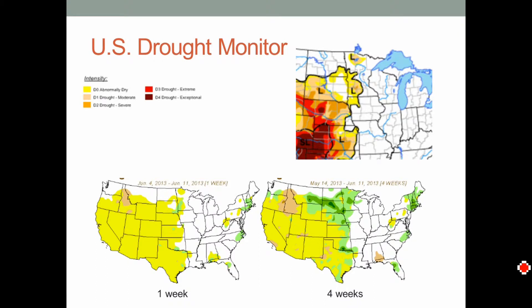Looking at the drought monitor, I want to focus on the bottom images showing changes over the last week and four weeks. Over the last four weeks, we started getting very wet — the green areas show increasing drought improvement, while yellow areas show decreasing conditions or more drought. The upper Midwest experienced drought relief over four weeks. But looking at just the one-week trend through June 11th, the area of high pressure has really kept things dry in the west, and almost the entire country gradually got a little bit drier.